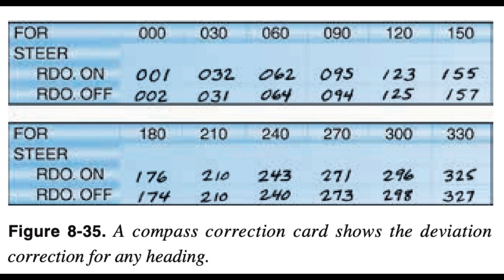The AMT records any remaining error on a compass correction card and places it in a holder near the compass. Only AMTs can adjust the compass or complete the compass correction card. Pilots determine and fly compass headings using the deviation errors noted on the card. Pilots must also note the use of any equipment causing operational magnetic interference such as radios, de-icing equipment, pitot heat, radar, or magnetic cargo. The corrections for variation and deviation must be applied in the correct sequence starting from the true course desired. Step 1: determine the magnetic course — true course (180°) plus or minus variation (+10°) equals magnetic course (190°).